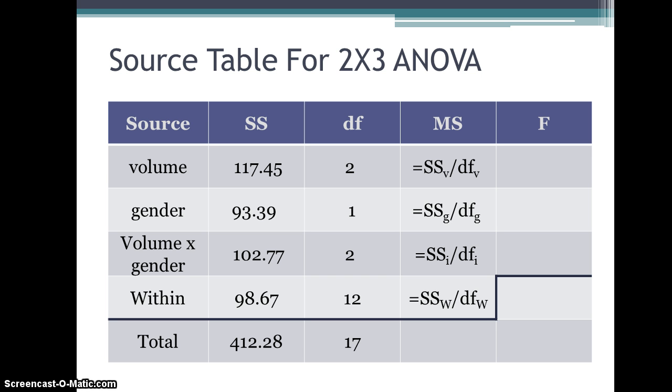Okay, so here's what we have for each of our different rows. So we're taking the sums of squares for gender divided by degrees of freedom for gender. Same thing for interaction. This 102.77 divided by 2 would go in here, and then the 98.67 for the sums of squares within divided by the 12 degrees of freedom within would go here. And you can check your answer.